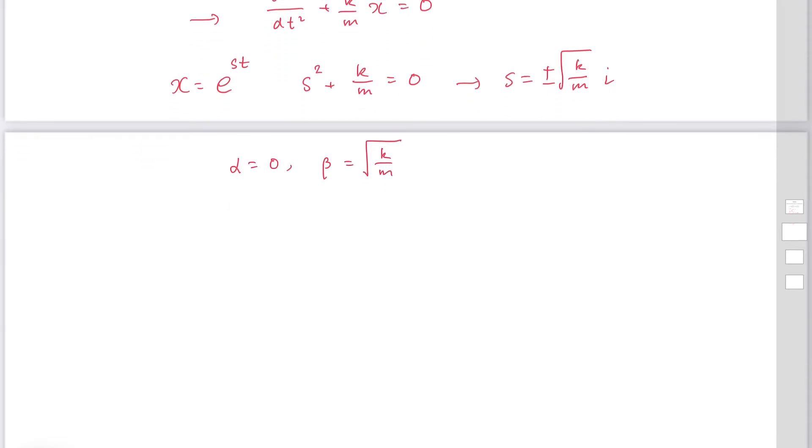The solution to the differential equation is expressed as x equals c sub 1 cosine square root k over m t plus c sub 2 sine square root k over m t.